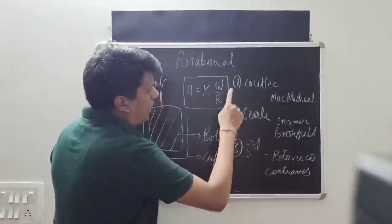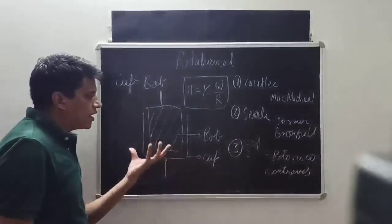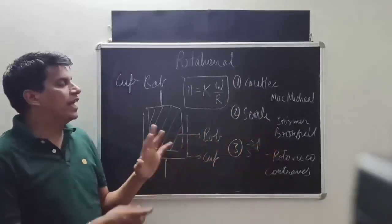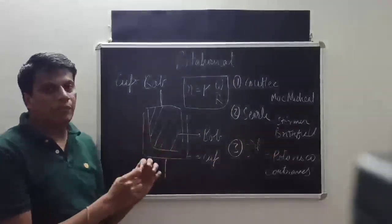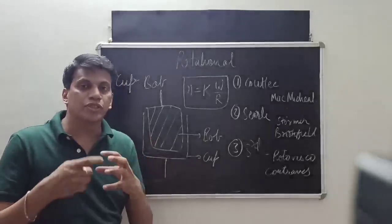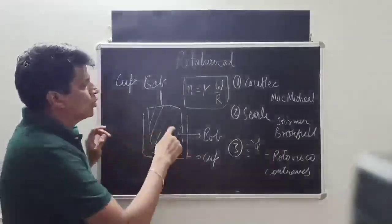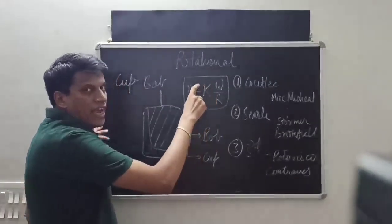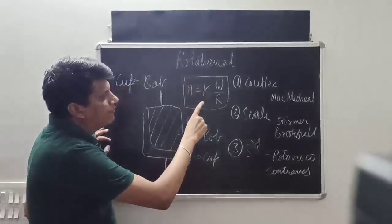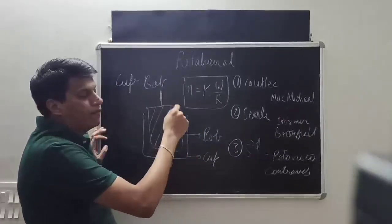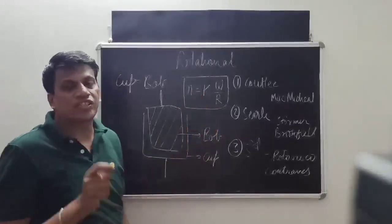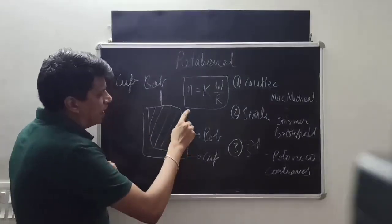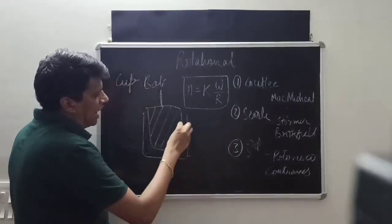This covers the types of cup and bob viscometers. As for how they work, they consist of a cup and a bob — one will rotate and measurement is taken. The measurement records the change in RPM as weight is applied. The equation is: viscosity equals k times W divided by R, where k is the instrument constant, W is the stress or weight applied, and R is the strain or RPM.